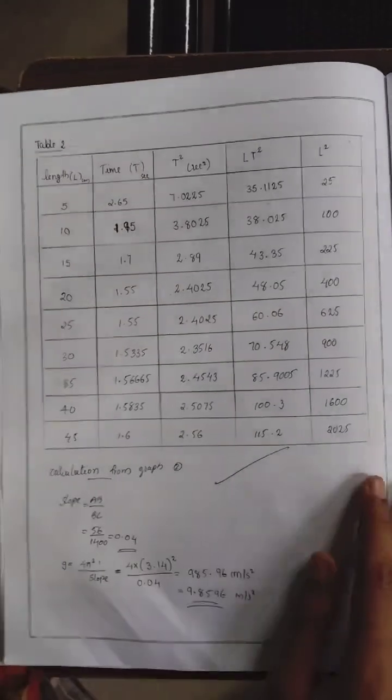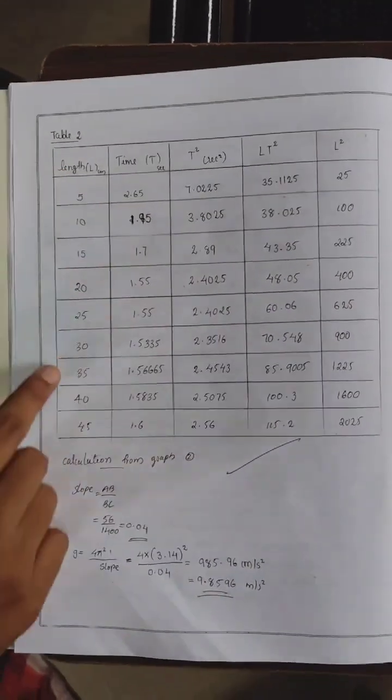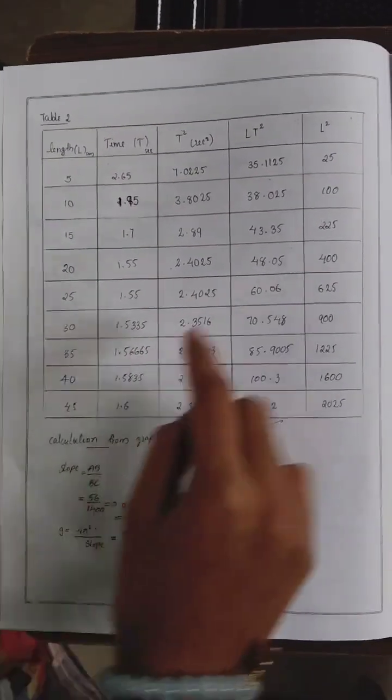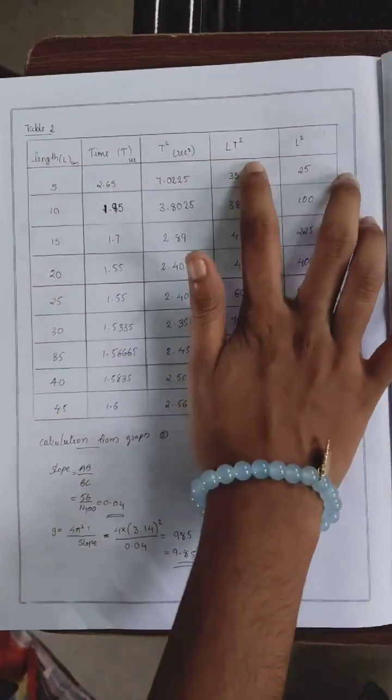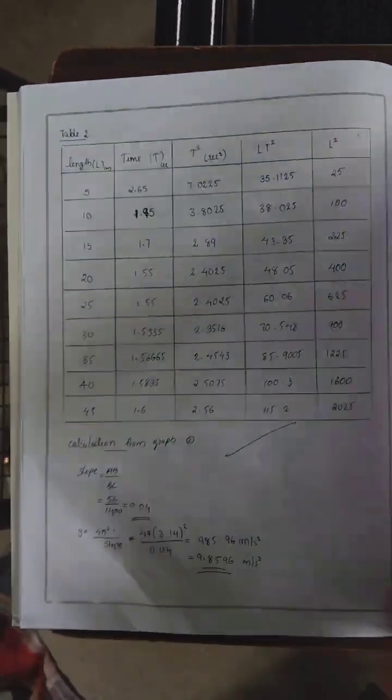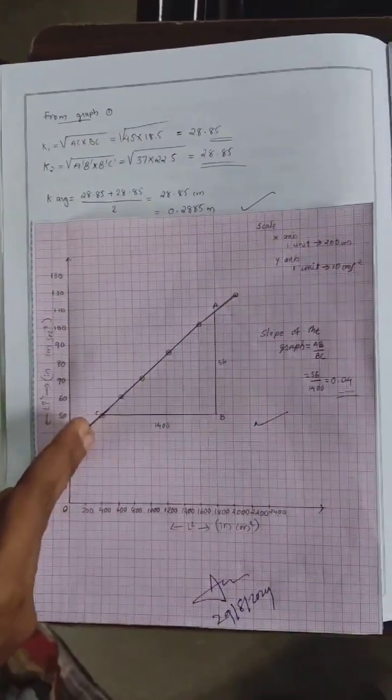This is the tabular column to find acceleration due to gravity. For that, we took the distance of the holes from one side of the center of gravity and the time period. From this, we calculated T square, L T square, and L square. These are the values we get. And from this, we drew a graph of L square and L T square. This is how we get the graph.